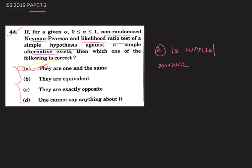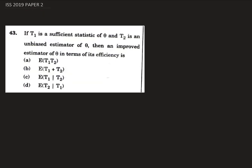Now let's look at question number 43. In this question, we are given that T1 is a sufficient statistic of theta and T2 is an unbiased estimator of theta. We need to find an improved estimator of theta in terms of efficiency — whether it is E(T1·T2), E(T1+T2), E(T1|T2), or E(T2|T1).